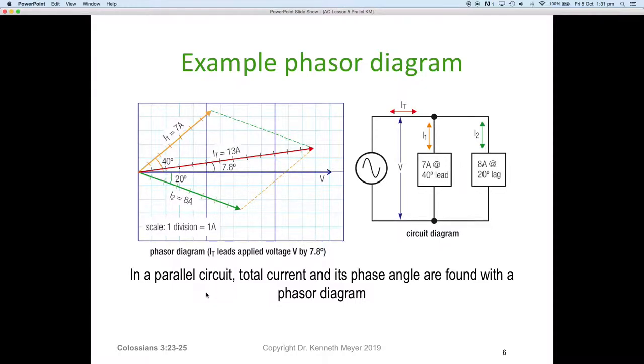Here's a little exemplar. We're going to start with the diagram on the right hand side. Here we have a voltage V. We're told the current I1 is 7 amps at 40 degrees lead. I2, the green one, 8 amps at 20 degrees lag. And then we have an I total in red. In a parallel circuit, total current and its phase angles are found with a phasor diagram. Kirchhoff's law still applies - the sum of the currents into a node must equal the sum of the currents out of the node.